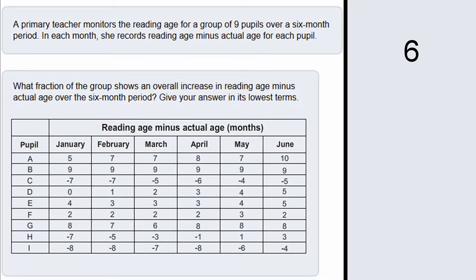So in total we have 6 pupils out of 9, so the fraction is going to be 6 out of 9. We can see the top and bottom are both divisible by 3, so we need to reduce this fraction to 2 thirds — dividing 6 by 3 and 9 by 3 — so the answer is 2 thirds.